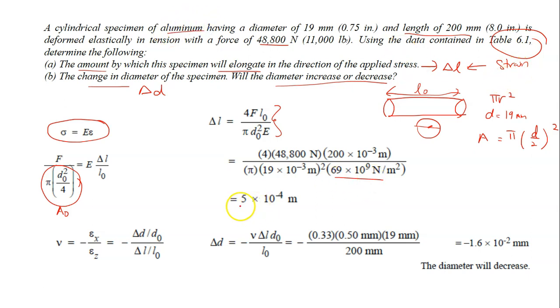Solving this, you will get delta L as 5 times 10 to minus 4 meter. And then it's time to calculate the change in diameter. So in this case, you know you can use the Poisson's ratio. Because Poisson's ratio, it has all this lateral and axial strain.